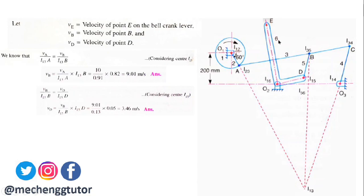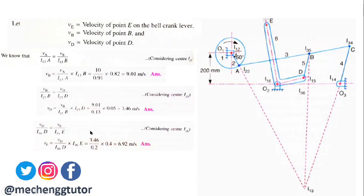Lastly, using instantaneous center I16, the equation is: VD / I16D = VE / I16E. We already have VD, so rearranging these terms and substituting, we ultimately get VE = 6.92 meters per second.